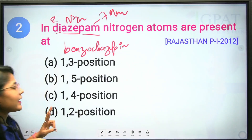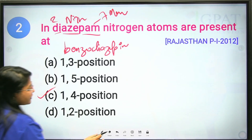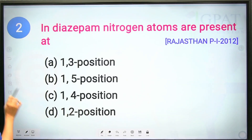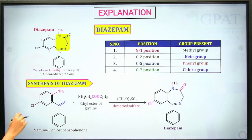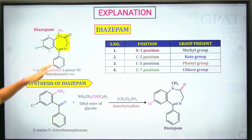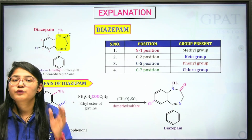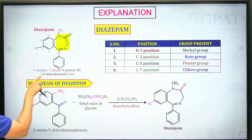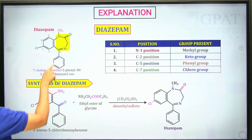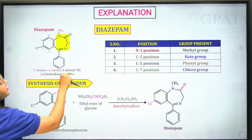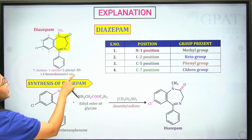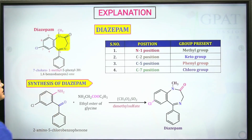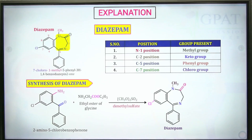The nitrogen atoms are present at positions 1 and 4, making it a 1,4-benzodiazepine. Looking at the structure, we can see nitrogen placement at the first and fourth positions. The IUPAC name for diazepam is 7-chloro-1-methyl-5-phenyl-3H-1,4-benzodiazepine-2-one.